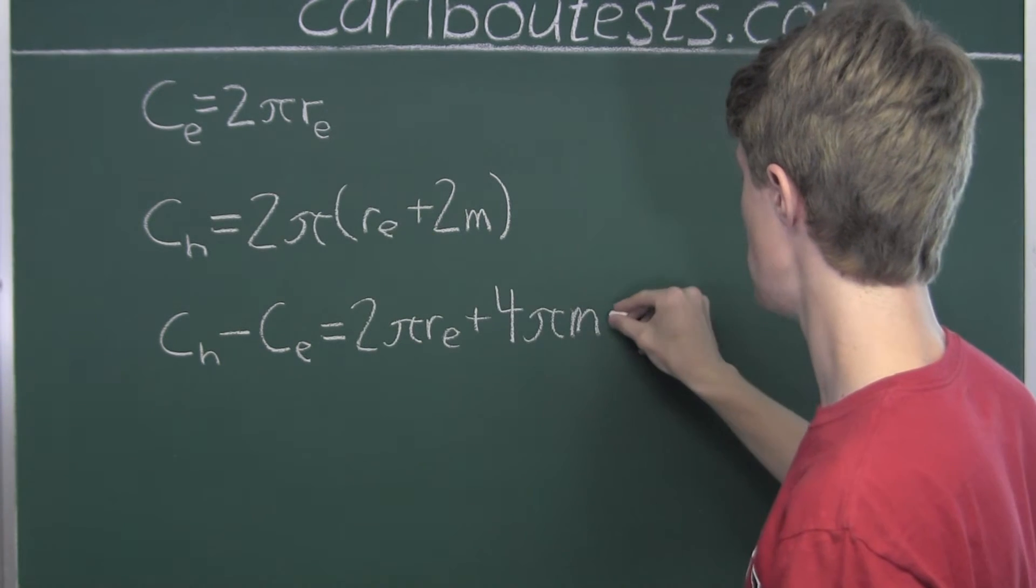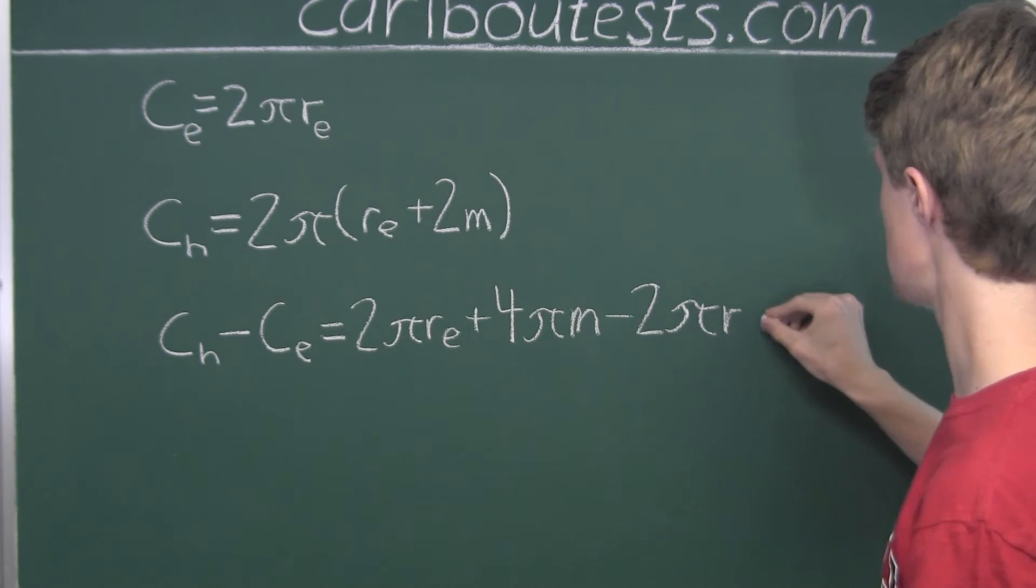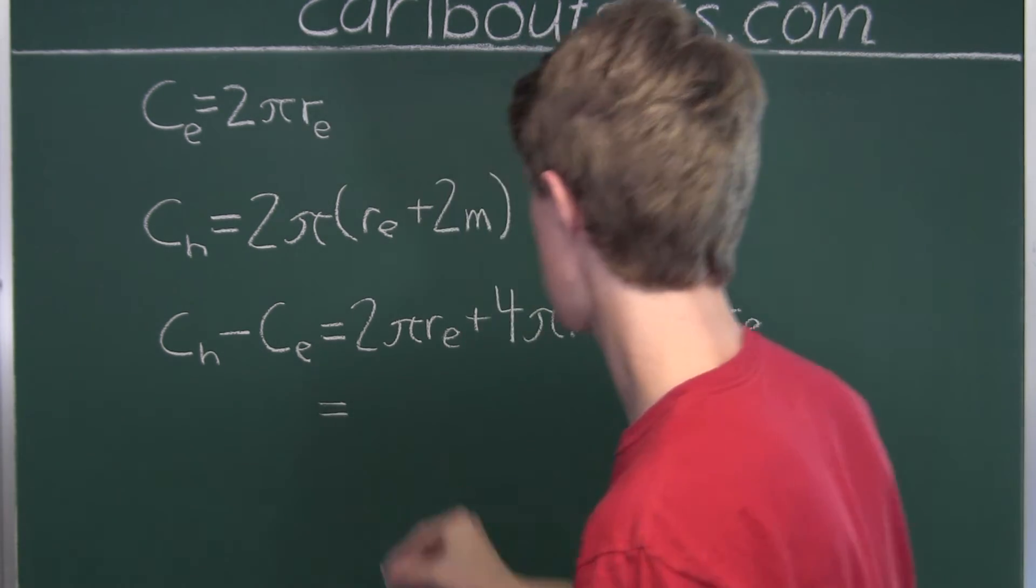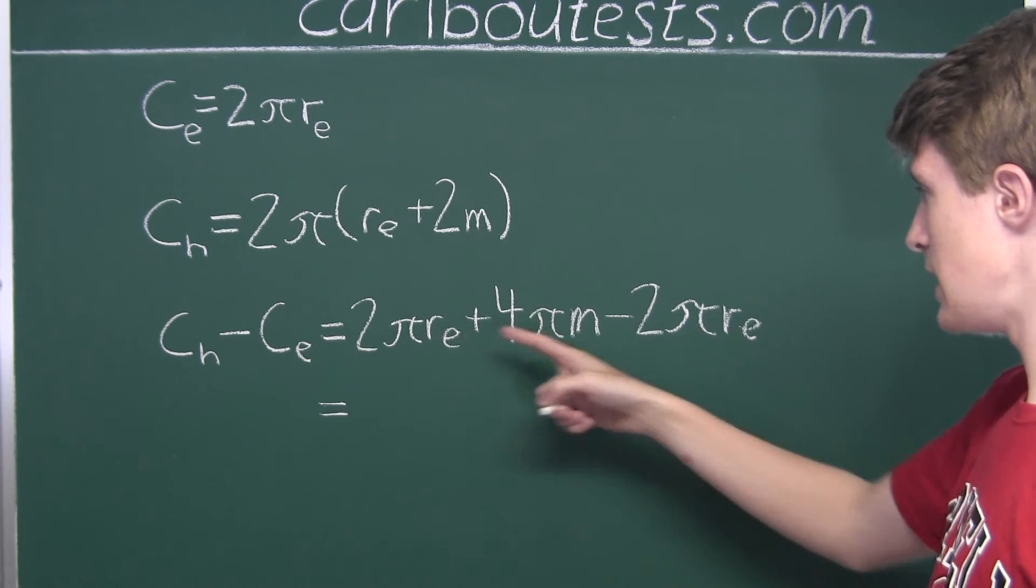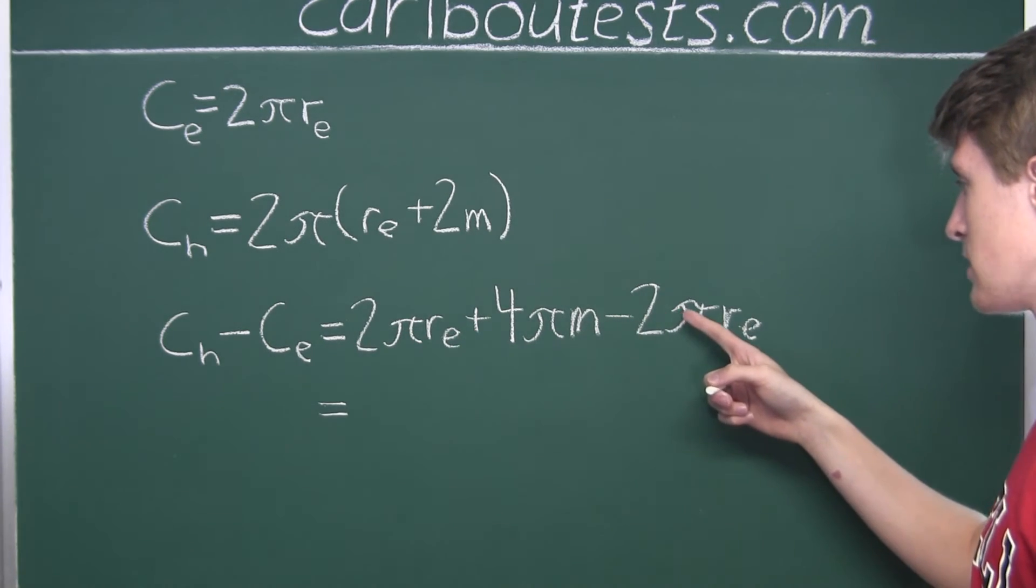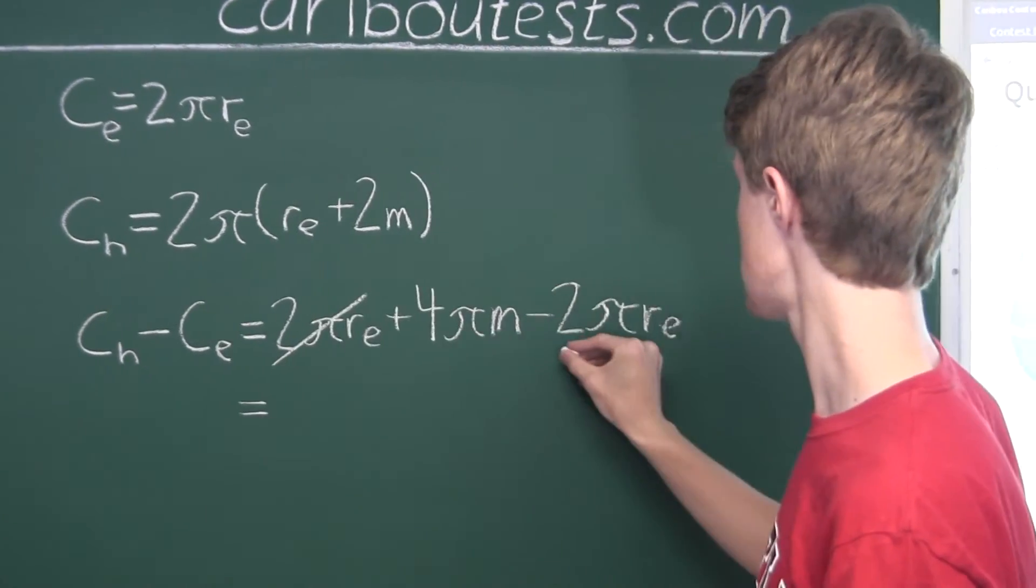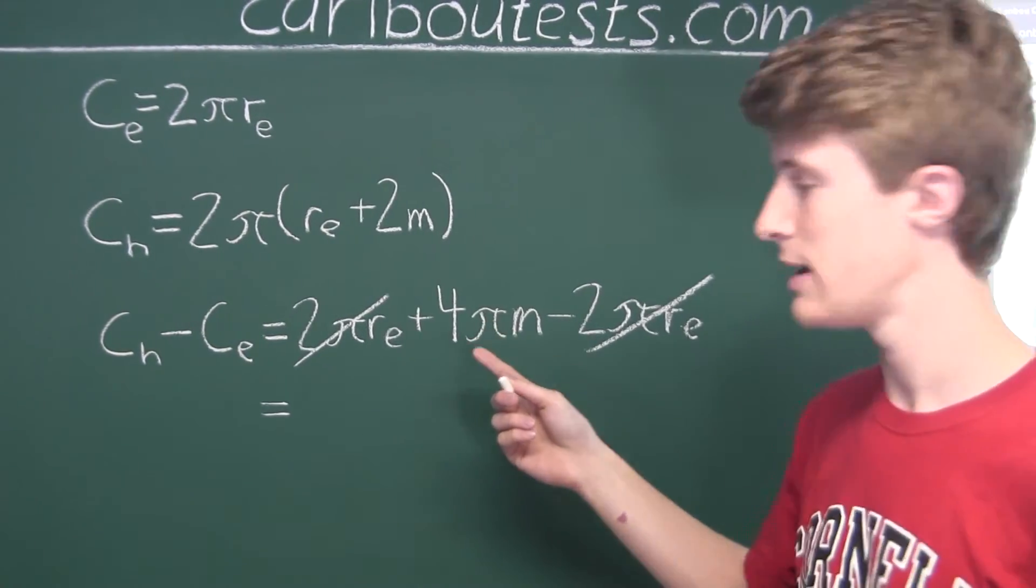Then we subtract the circumference of the equator, which is 2 pi times R sub E. We have 2 pi R sub E and then minus 2 pi R sub E, so those two cancel out, and all we have left is 4 pi m.